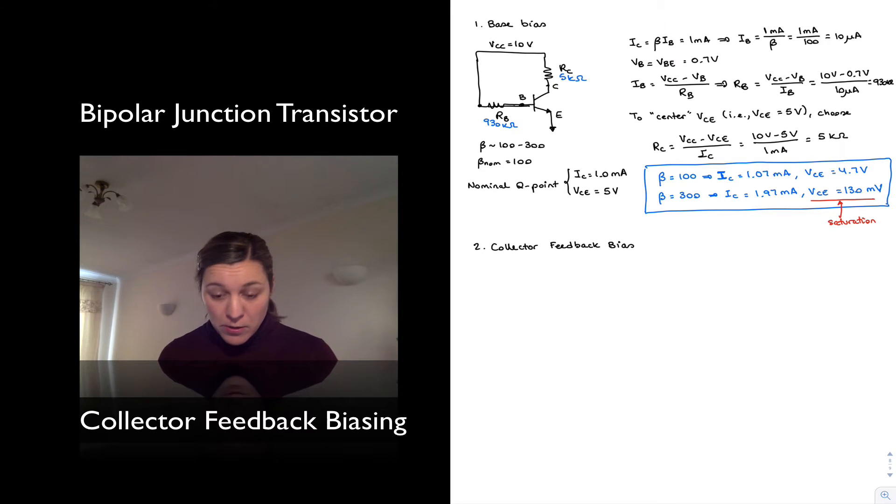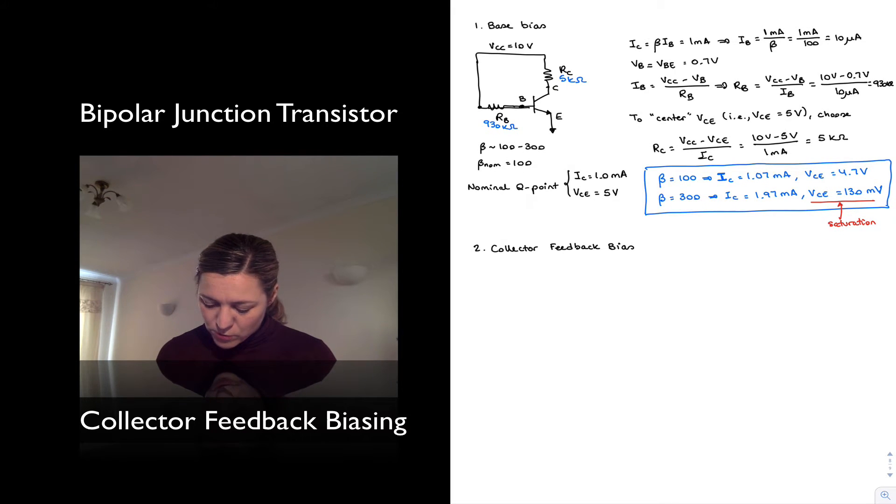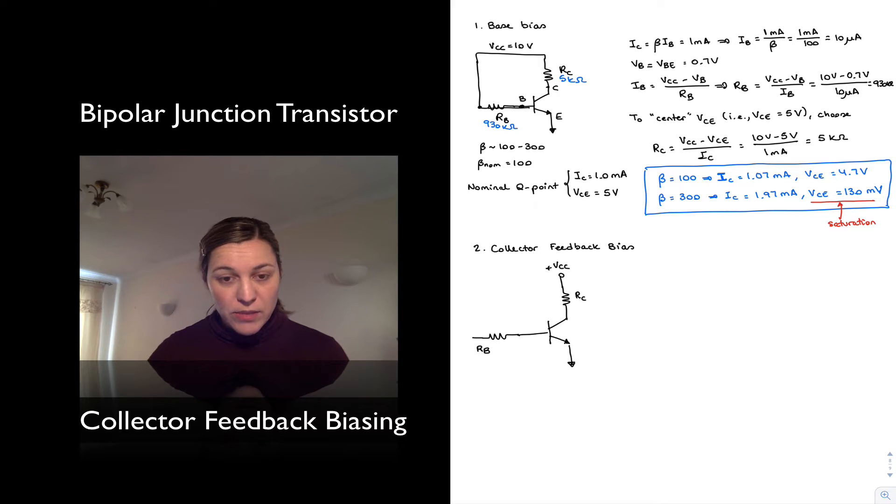And for that, I'm going to design my biasing network very similar. So I'm going to have a connection from VCC to the collector of my transistor through a collector resistor RC. And I'm also going to have a base resistor RB. But in this case, instead of taking my base voltage from the supply, I'm going to take it from the collector. So this is base, collector and emitter terminals.